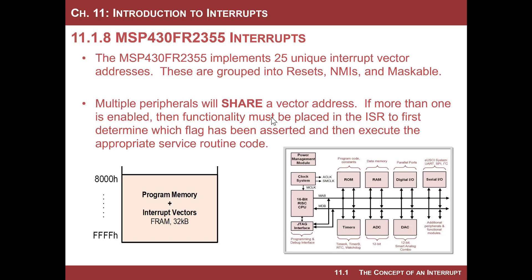We only have 25 unique vector addresses, so we're only going to write a handful of interrupt service routines. If two or more peripherals share a vector address, you have to put code in your ISR to figure out which one requested the interrupt — you check the flags to determine which one fired. Luckily, they're not randomly grouped. For example, all of Port 1 shares one vector address, but every bit within Port 1 can generate its own interrupt flag. They're related, so it's not as difficult as you might think.